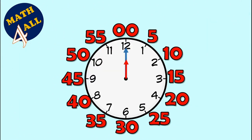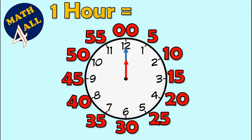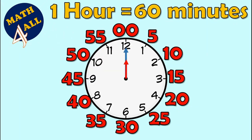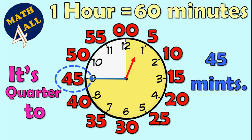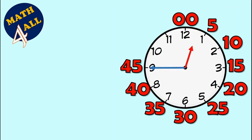Quarter to means you have to know that one hour equals 60 minutes, so three quarters of an hour equals 45 minutes. When you see the long hand on 9, you will say it's quarter to — it means quarter to reaches the next hour, or it's 45 minutes. Let's see how to read the clock.